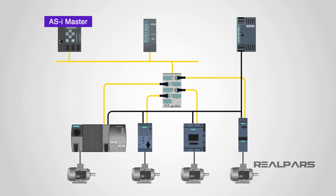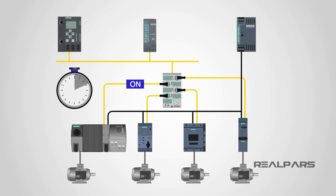The transmissions between a master and a slave device on an AS Interface are predefined and cyclic, meaning that determining the time it takes for an output to switch on or off can be easily calculated with great accuracy. This can be extremely useful for applications where timing is of the essence.